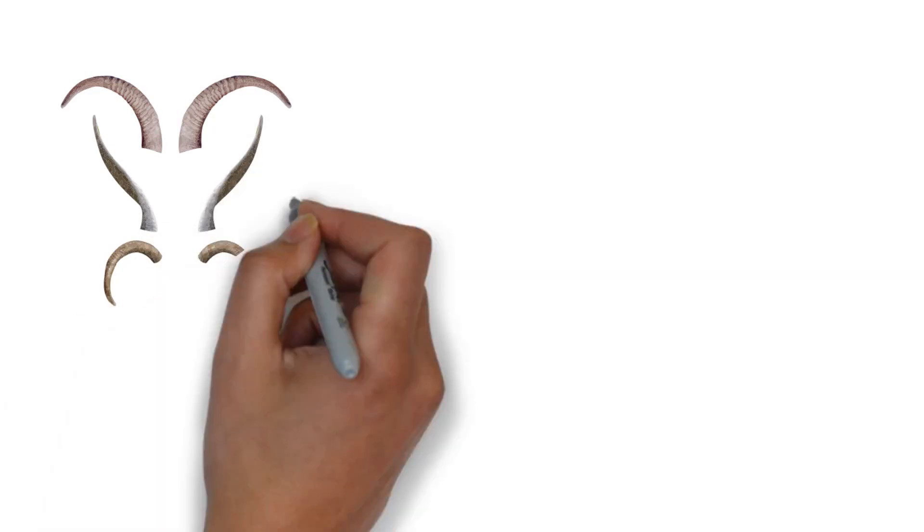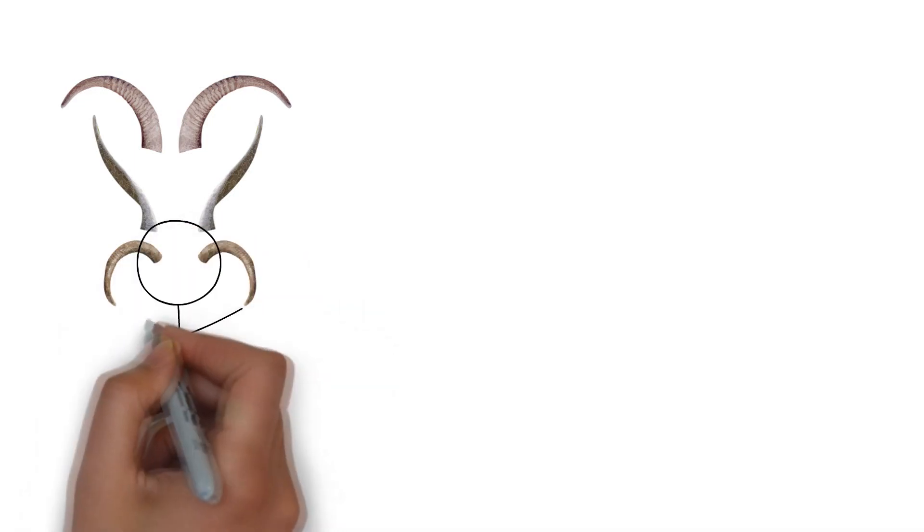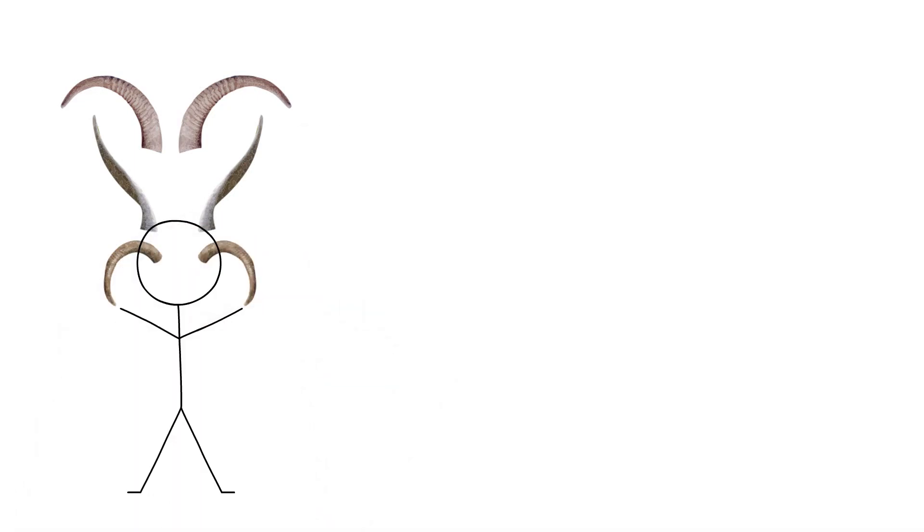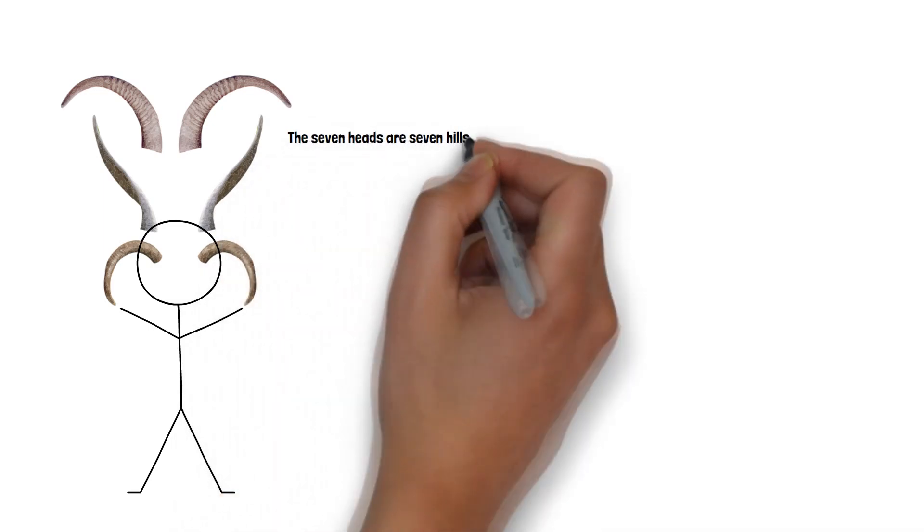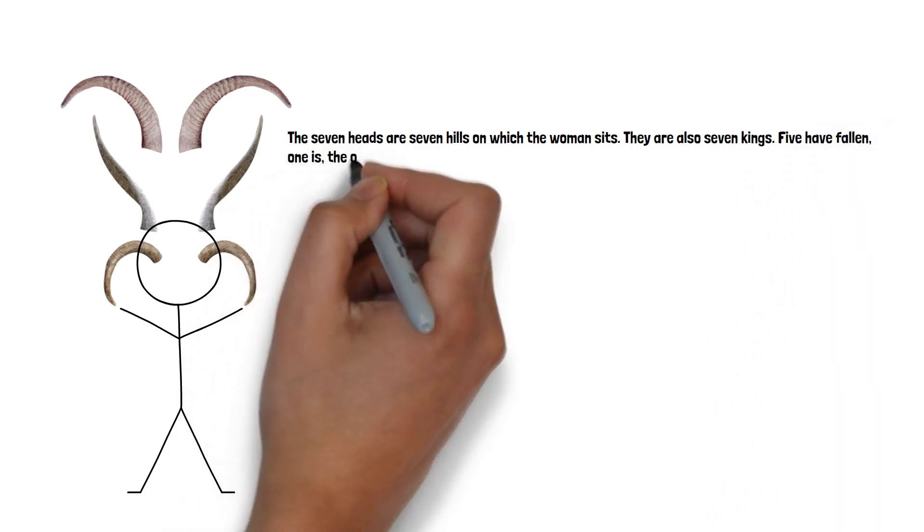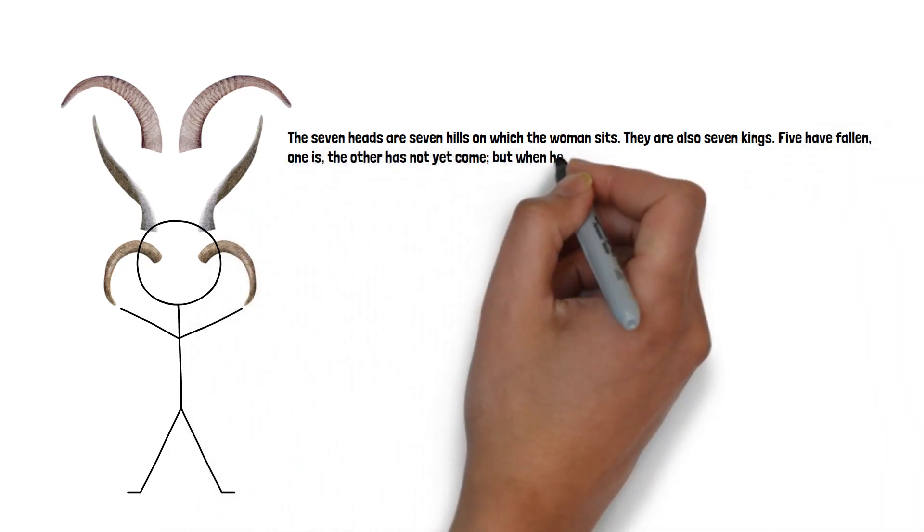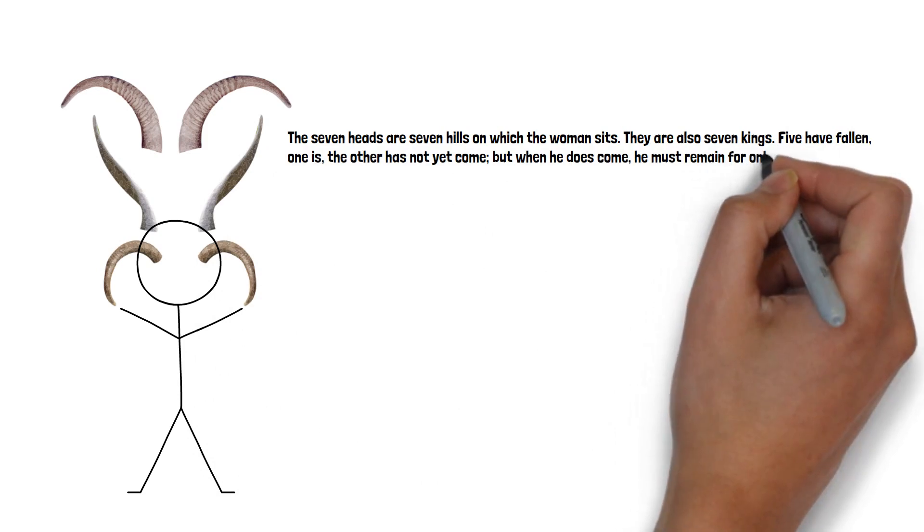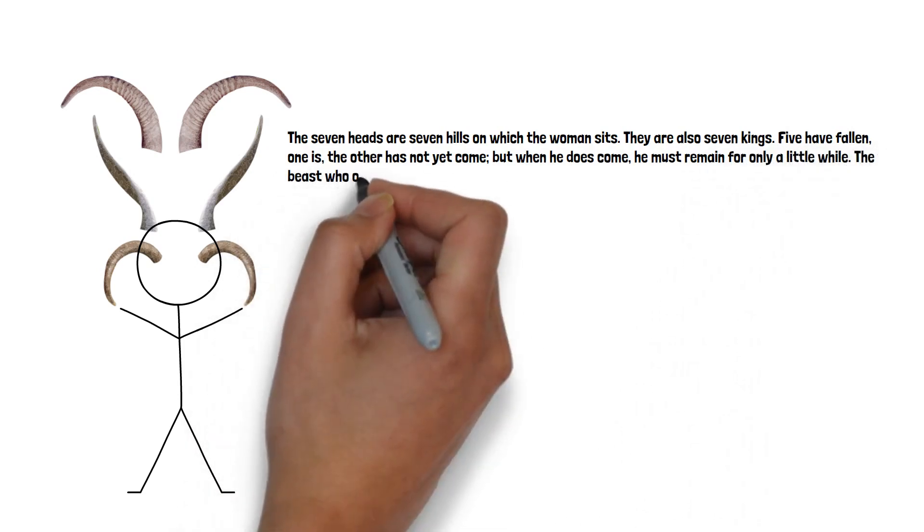Now, an important part of the symbology found on the beast in the Book of Revelation are the heads and horns, which the Book of Revelation actually provides the interpretation for. As Revelation 17 states: The seven heads are seven hills on which the woman sits. They are also seven kings. Five have fallen. One is. The other has not yet come. But when he does come, he must remain for only a little while.